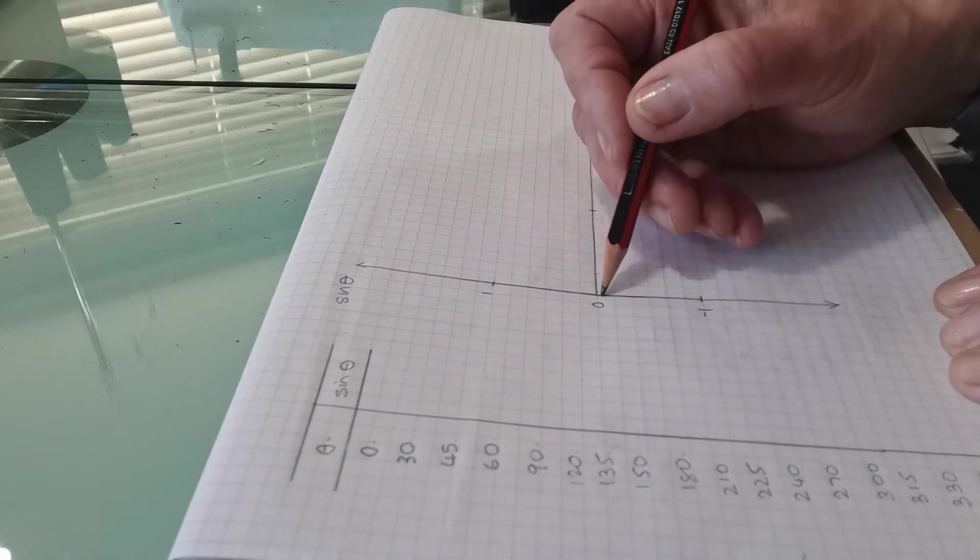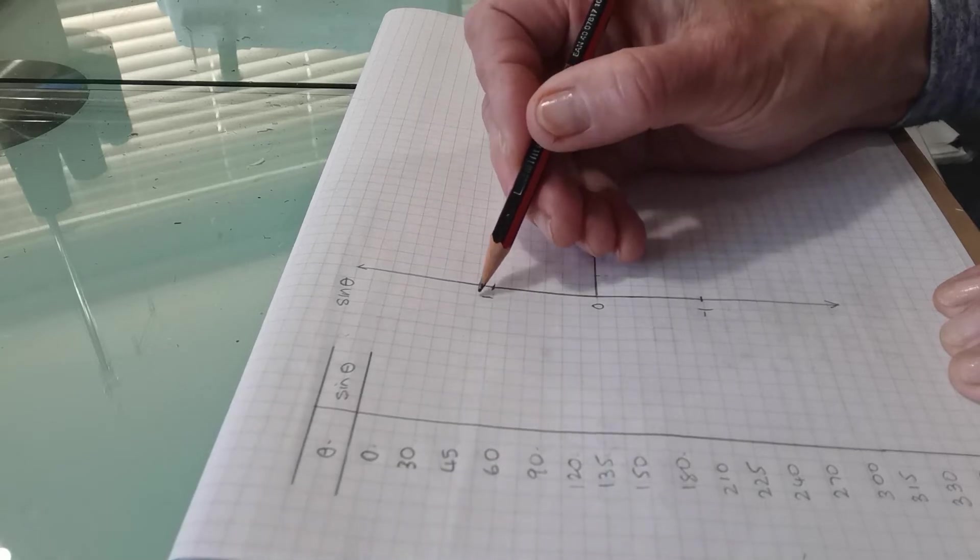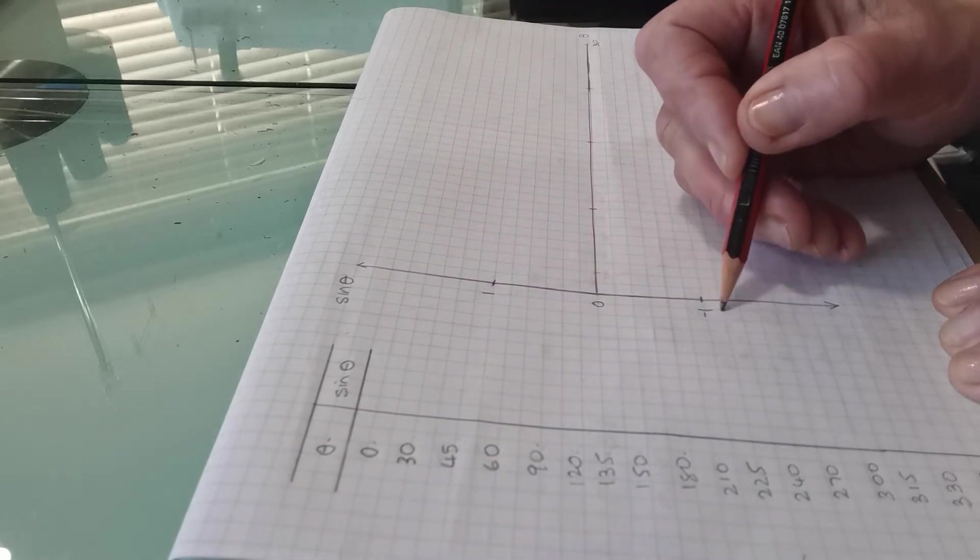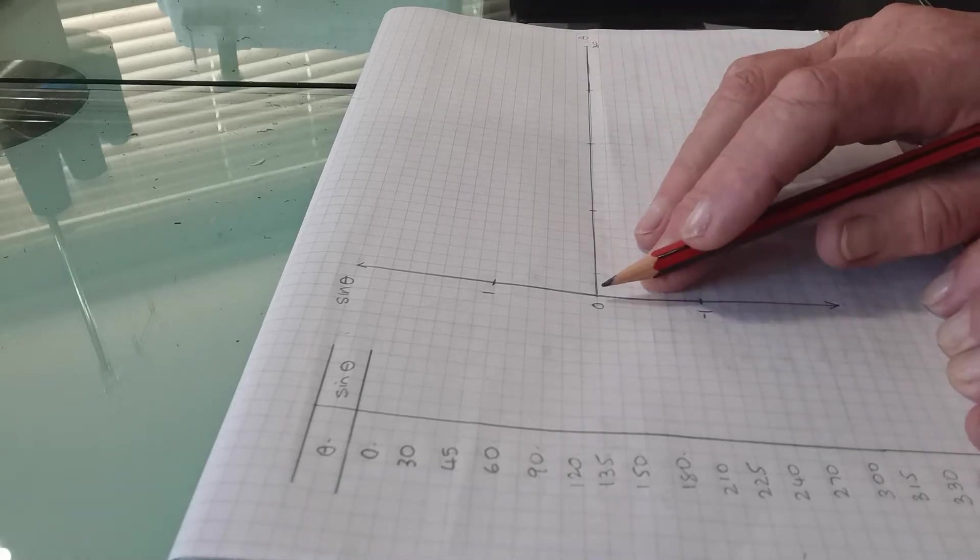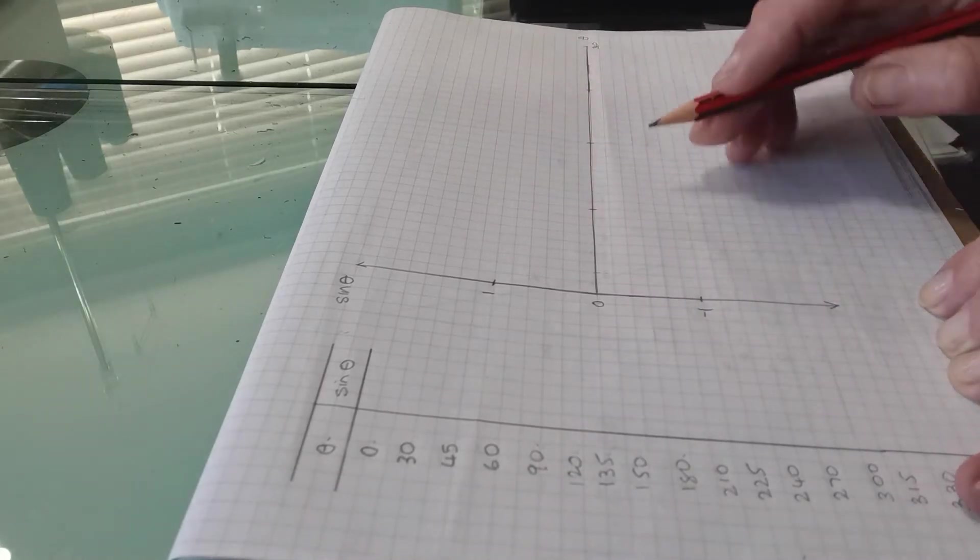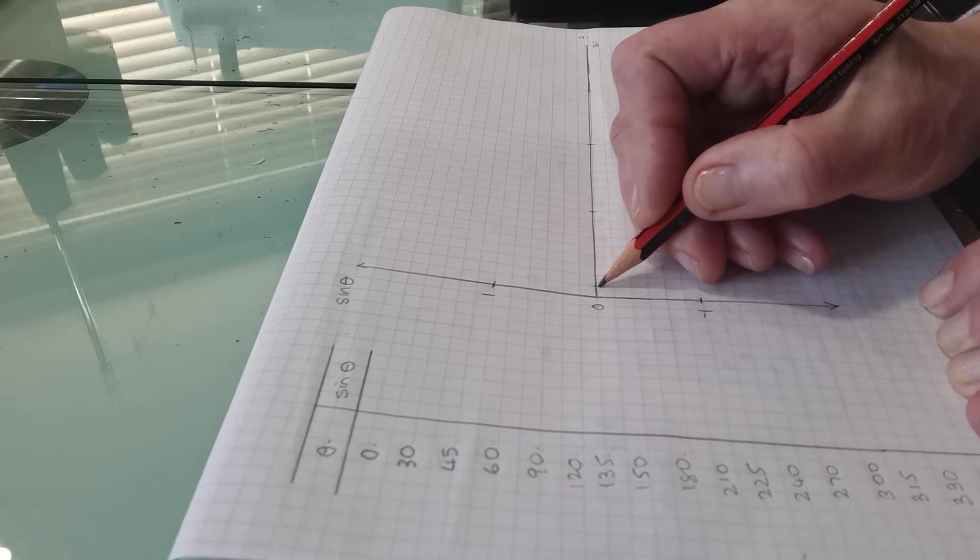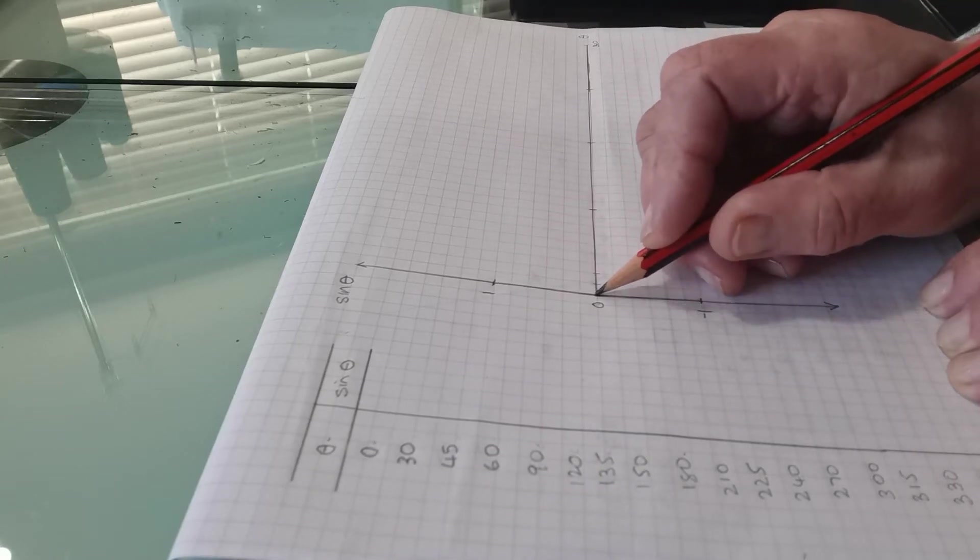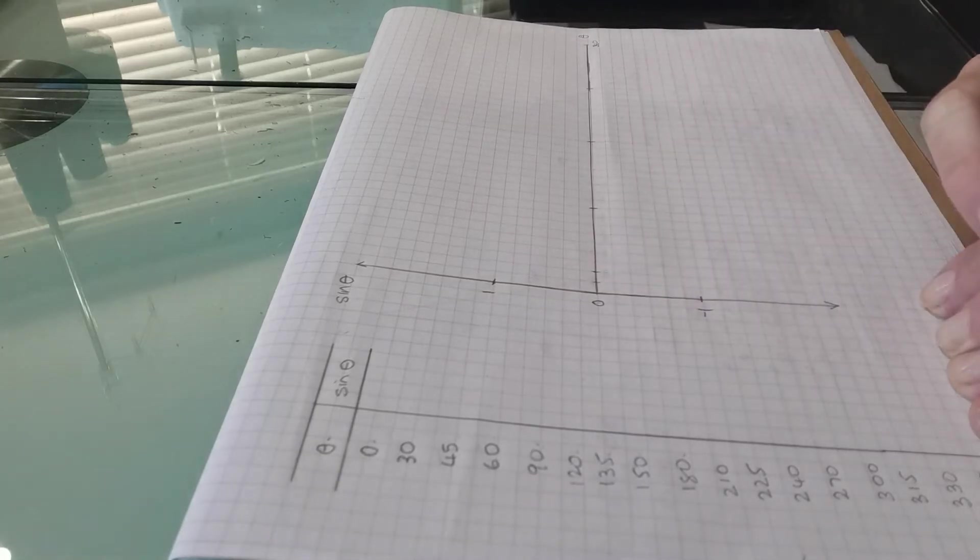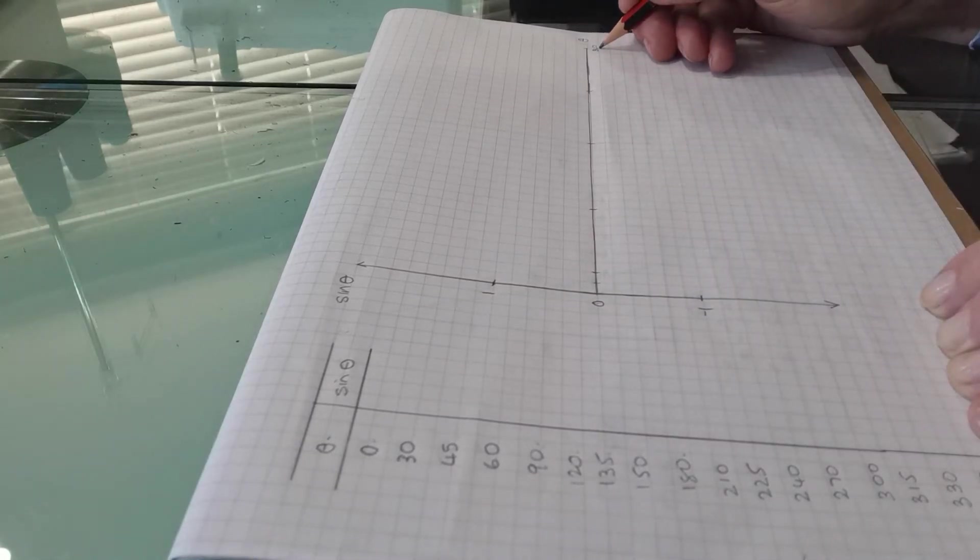I've just used three centimeters to make one, zero and negative one so it's like a t-graph and then from zero the horizontal axis each single grid line is 10 degrees. So we're going up a centimeter equals 20 degrees up to 360.